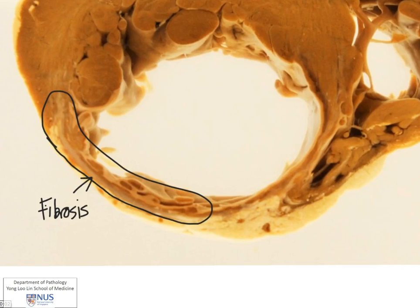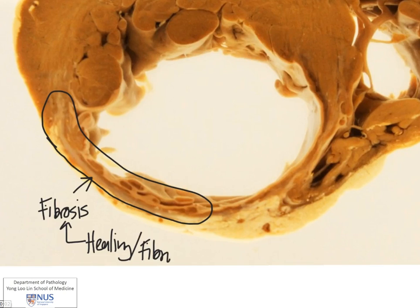So why is there fibrosis? The reason is because this is healing or fibrous repair, and the reason why there is fibrous repair is because there was originally death of the heart cells — the instance of an acute myocardial infarction.